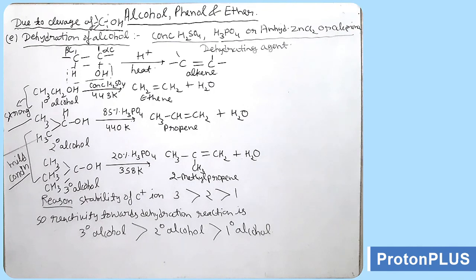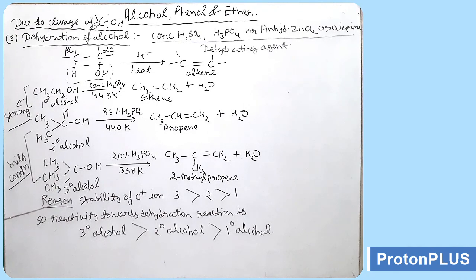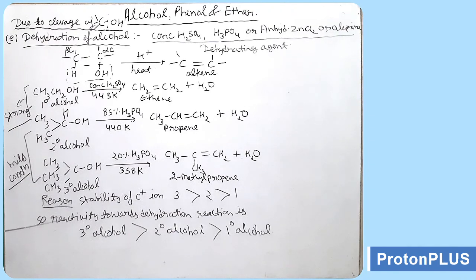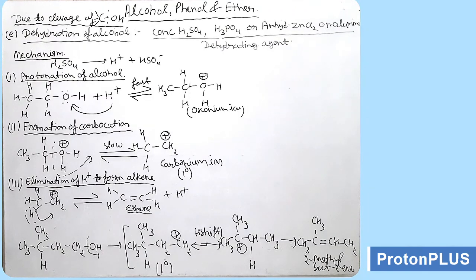The reason for using strong conditions for 1° alcohol and milder conditions for 2° and 3° alcohols: in the case of 3° alcohol, a 3° carbonium ion forms; in the case of 2° alcohol, a 2° carbonium ion (isopropyl carbocation) forms. The 3° carbonium ion is more stable, more rearrangement is possible, and 3° alcohol is more reactive toward dehydration. Reactivity order: 3° > 2° > 1° alcohol for dehydration/elimination reactions.